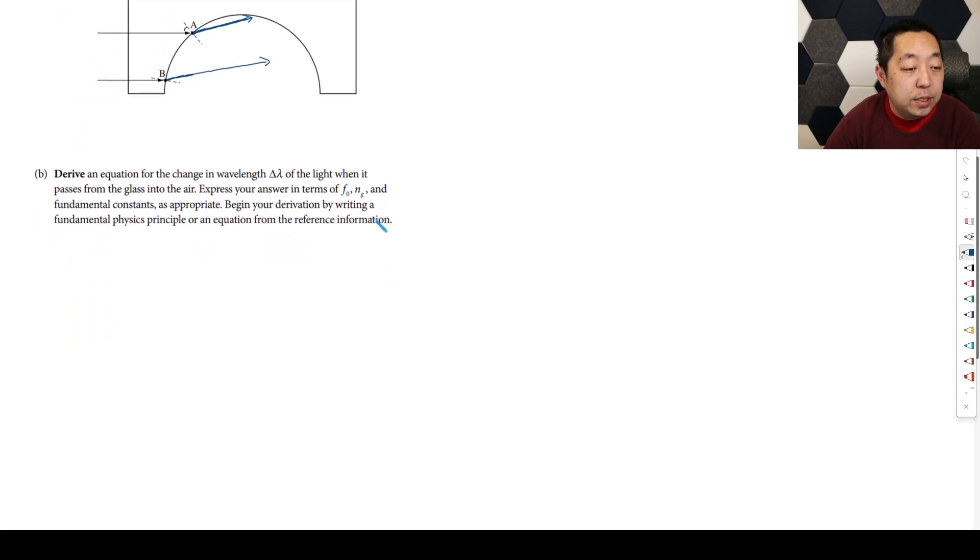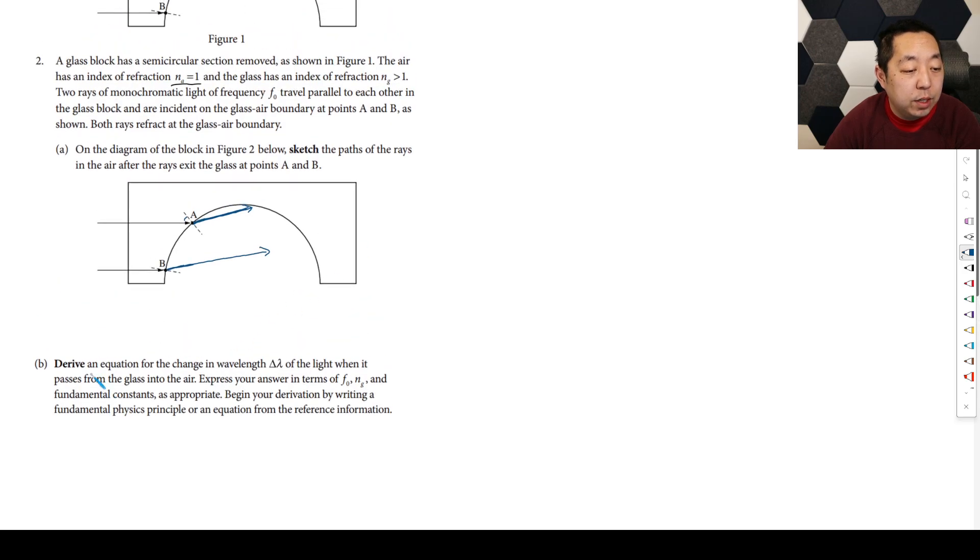This should be steeper in some way. I think in the scoring they're just going to make sure that this is moving at a steeper angle like that. Okay, so then the next step is a derivation. We want to find an equation for the change in the wavelength of the light when it passes from glass into the air. Express your terms of F0, NG, and fundamental constants.